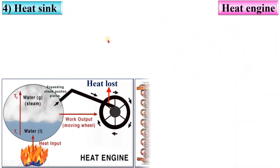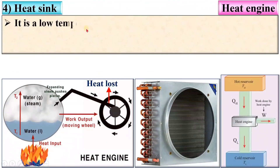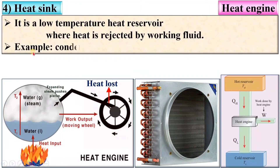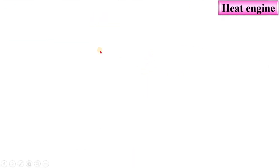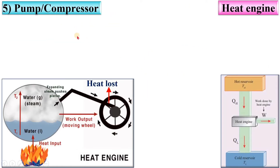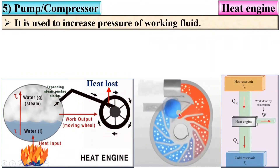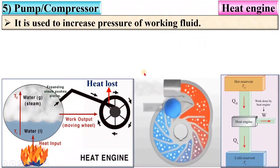Next, heat sink — it is a low temperature heat reservoir where heat is rejected by the working fluid; here the atmosphere is the heat sink. An example is the condenser. Next, pump or compressor — it is used to increase the pressure of the working fluid.